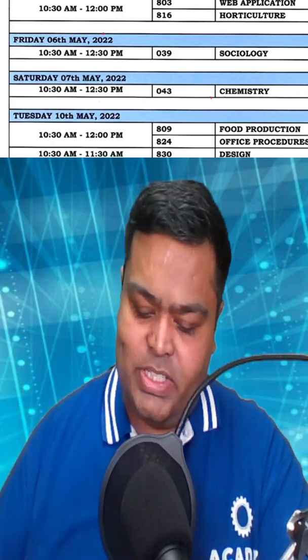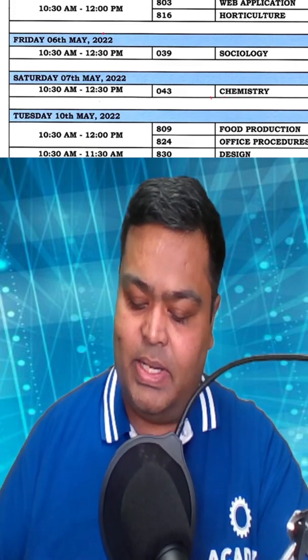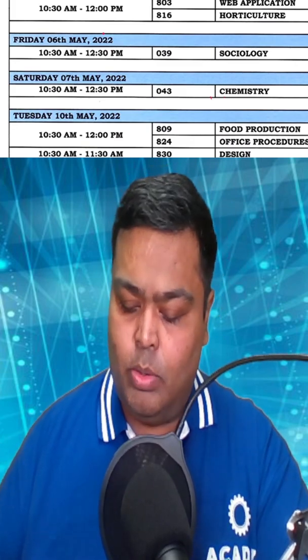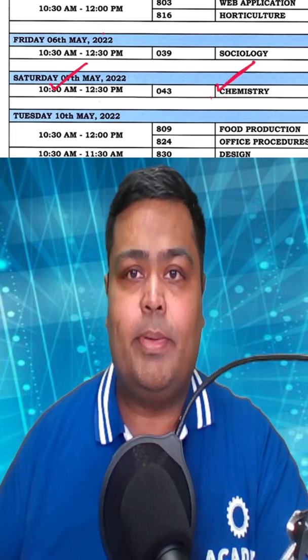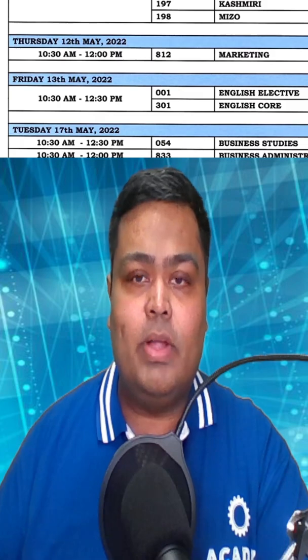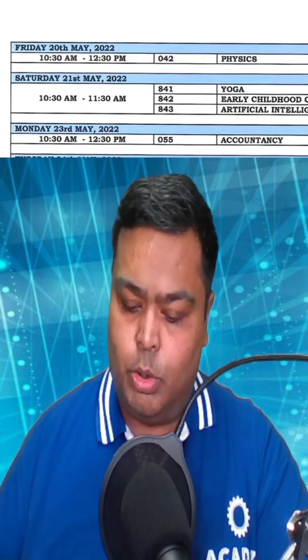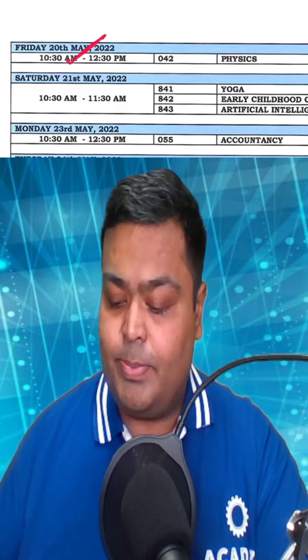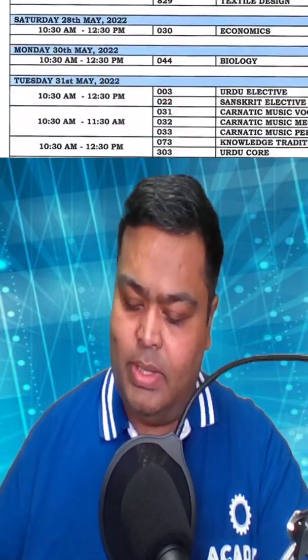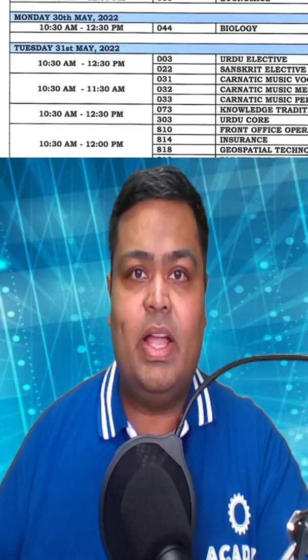Hi students, CBSE has finally released the Term 2 date sheet. For the JEE Main and NEET aspirants, the first paper is on the 7th of May — that's the Chemistry paper. Directly after that, the paper is on the 13th of May, which is the English paper. The next important paper is on the 20th of May, which is the Physics paper.